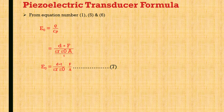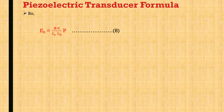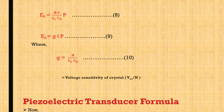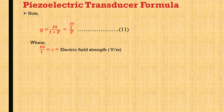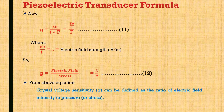e0 equals (d·t / epsilon_r · epsilon_0) multiplied by f/A, where f/A equals p, which is pressure or stress in Newton per meter squared. So e0 equals d·t·p / (epsilon_r · epsilon_0), which can be written as e0 equals g·t·p, where g equals d divided by (epsilon_r · epsilon_0) and is known as the voltage sensitivity of the crystal. Therefore g equals e0 divided by (t·p), where e0/t equals electric field strength. So g equals electric field divided by stress, meaning voltage sensitivity g is defined as the ratio of electric field intensity to pressure or stress.